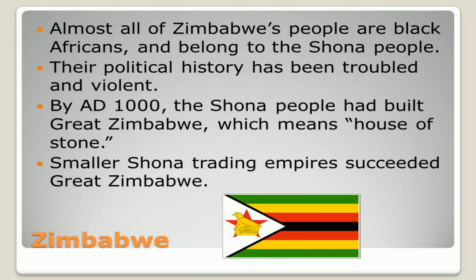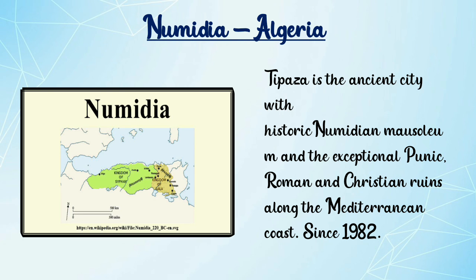Now we are going to learn the next slide. It's Numidia. Numidia is now Algeria. Numidia is the old name of Algeria. It's spelled N-U-M-I-D-I-A. The new name is Algeria. A-L-G-E-R-I-A.